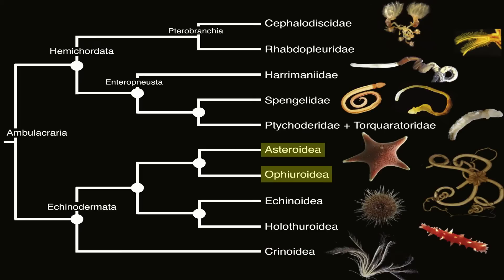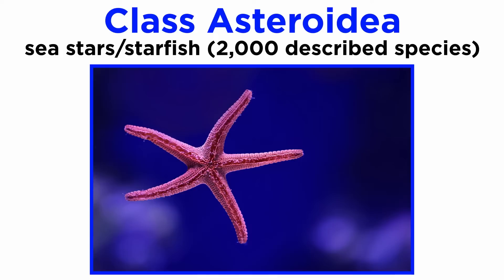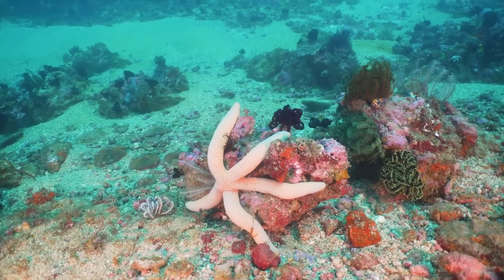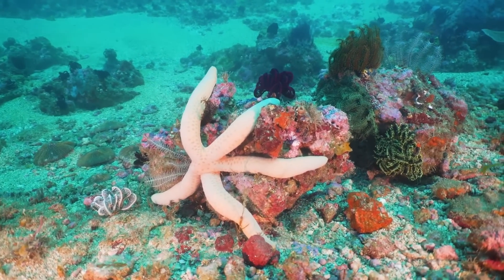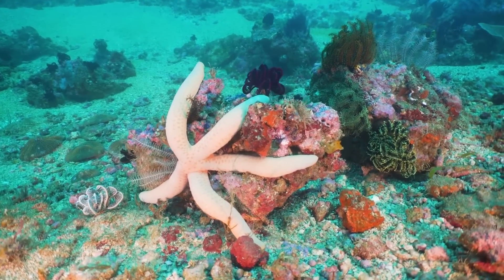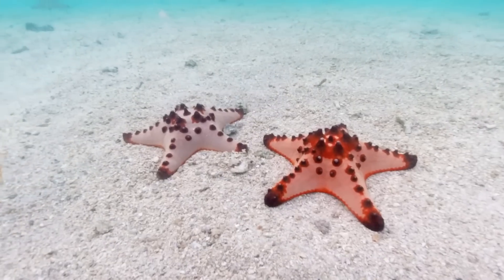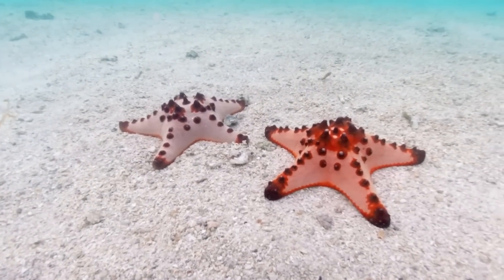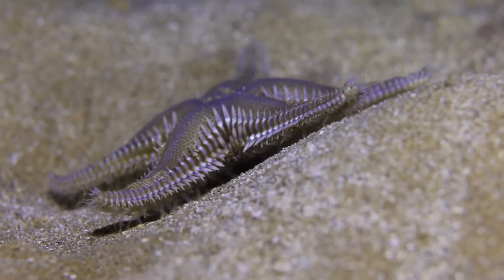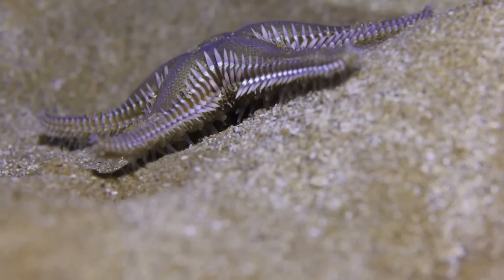In this tutorial we will discuss Asteroidea and Ophiuroidea. Members of class Asteroidea are commonly known as sea stars or starfish. There are nearly 2,000 described species of sea stars that are found in all the world's oceans, from the tropical zones to the polar regions, from the intertidal zones to the abyssal depths. They are perhaps the most familiar of the echinoderms, and many are opportunistic predators that feed on benthic invertebrates.